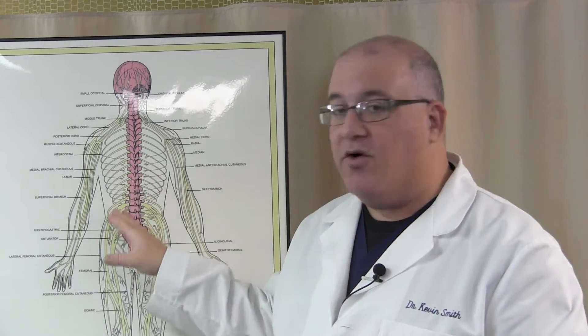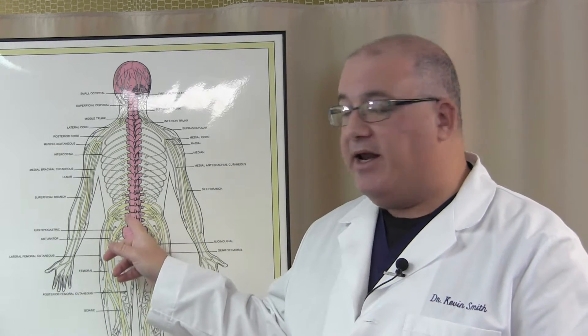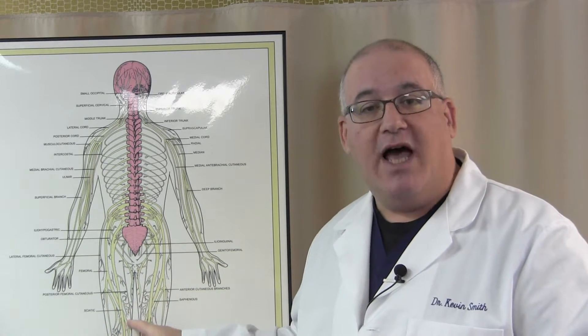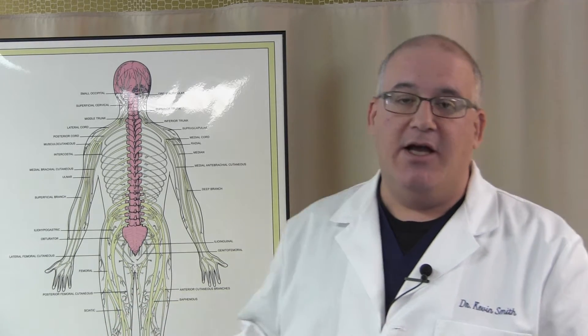One of the things we have to do to address this problem is find out where in the neuro kinetic chain you're having a breakdown — where you're having problems with your nervous system. It could be coming from the spine, from some of the peripheral nerves, or from the nerves that are actually in the knee joint. The good news is that when you come into my office, we do a thorough neurological examination to find out where the source of the problem is coming from, and once we know where it is, we can fix it.